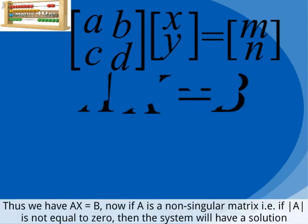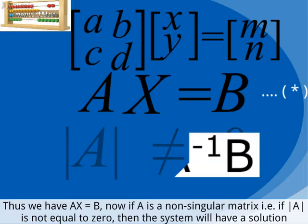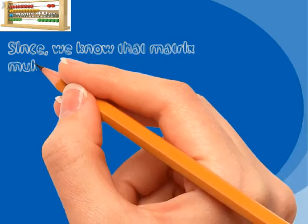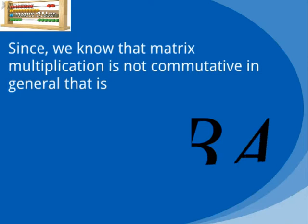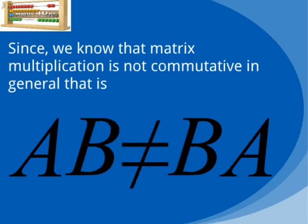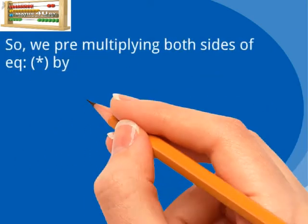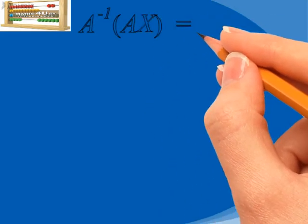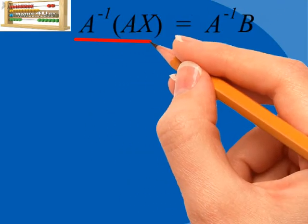Thus we have A times X is equal to B. Now if A is a non-singular matrix, that is if the determinant of A is not equal to zero, then the system will have a solution. Since matrix multiplication is not commutative in general — that is, AB is not equal to BA — we pre-multiply both sides of the equation by A inverse, using the associative law of multiplication.